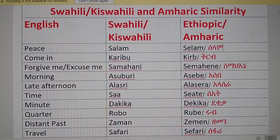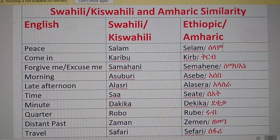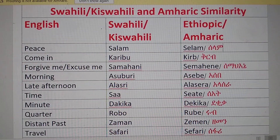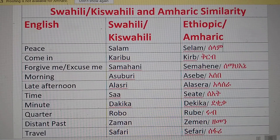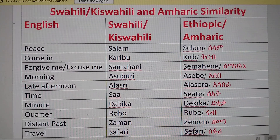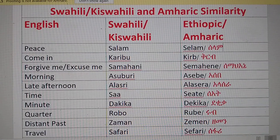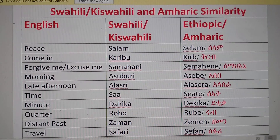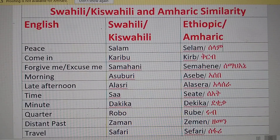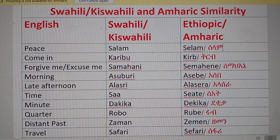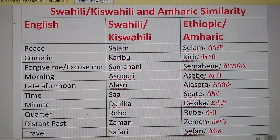The next word is 'come in.' In Swahili it is 'Karibu,' and in Amharic it is also 'Karibu.' I chose this word because even though the English definition of Karibu in Swahili is 'come in,' in Amharic Karibu means 'near.' The words are the same — Karibu and Karibu — from a common root word. 'Come in' and 'near' could well be the same word.